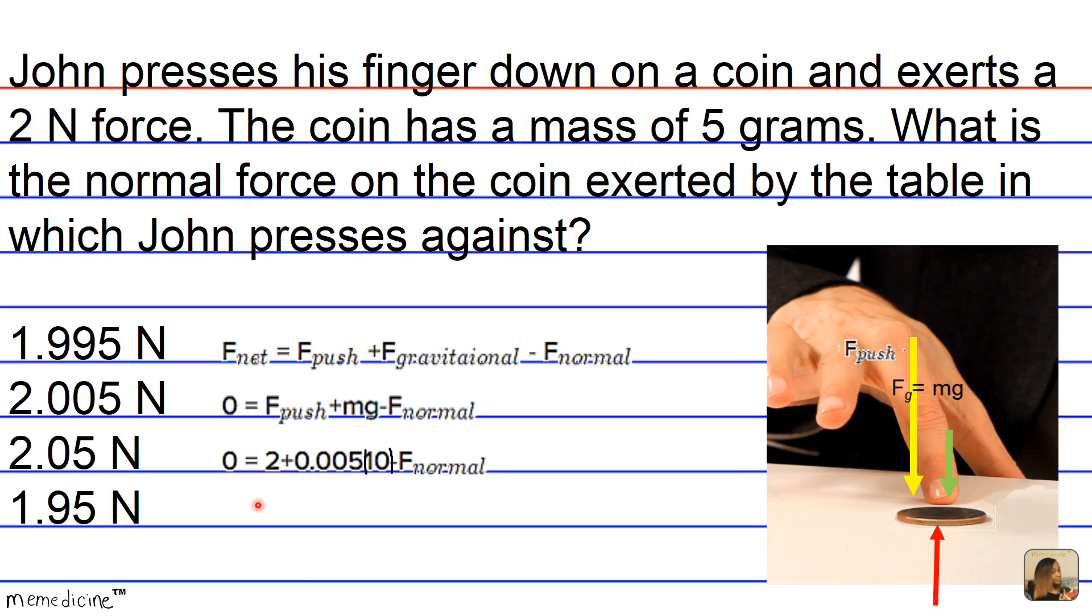So therefore, we can begin to plug in some values. Our F push, we know we're told that John pushes down with a force of two newtons. We already converted our mass to 0.005 kilograms. And we're approximating the acceleration due to gravity at 10 meters per second squared, rather than 9.8, because on the MCAT, you're not allowed to use a calculator.